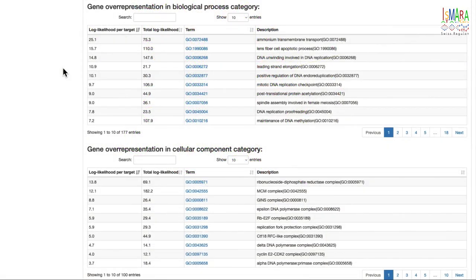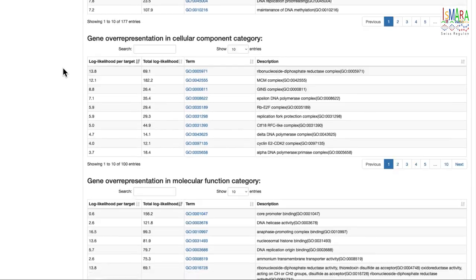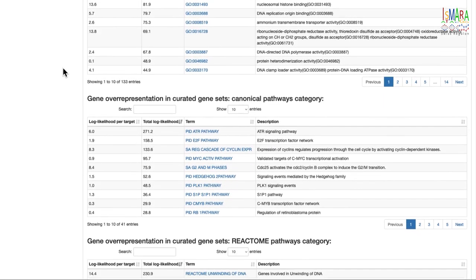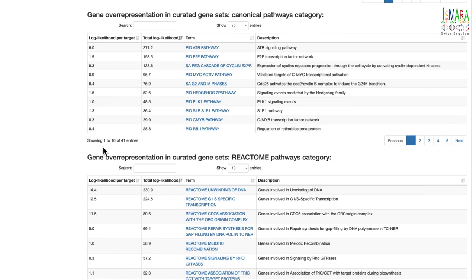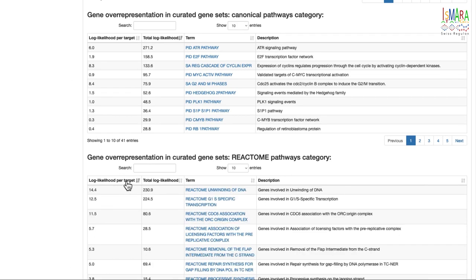ISMARA also investigates which gene ontology categories are enriched among the targets. These tables of enriched GO categories can be interactively sorted either by total score summed over all targets in the category, or by the average score per target.